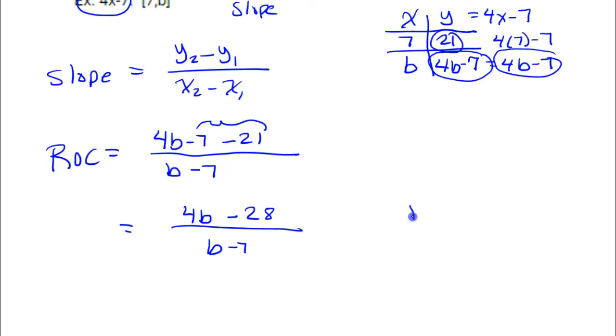Of course, b cannot equal 7, because if it did, we would be dividing by 0. And that would be undefined. So keep in the back of your mind that b is not allowed to be 7.